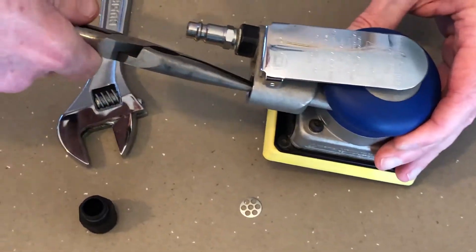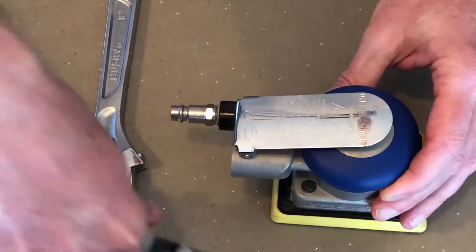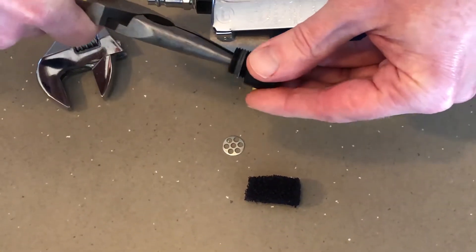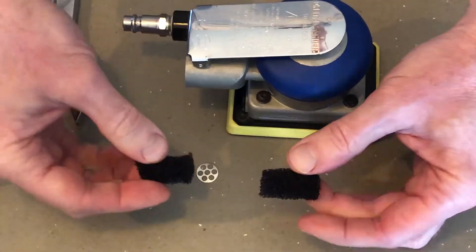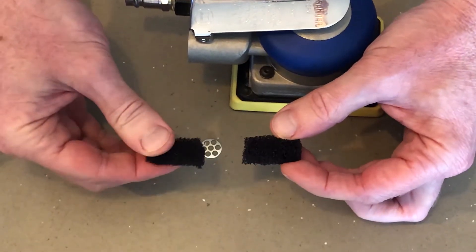I like to use a pair of needle nose pliers to remove the inner muffler inserts. With them removed, you can actually clean and replace them if they're not too damaged.